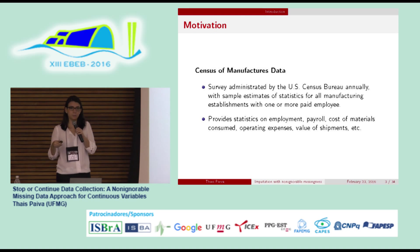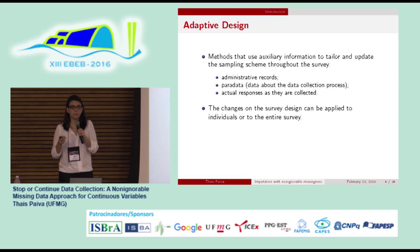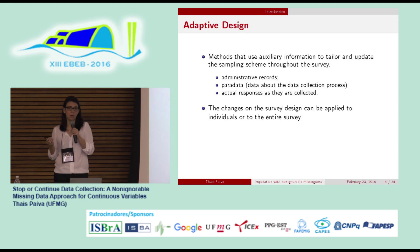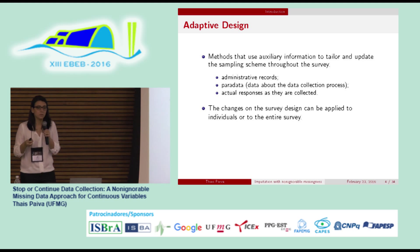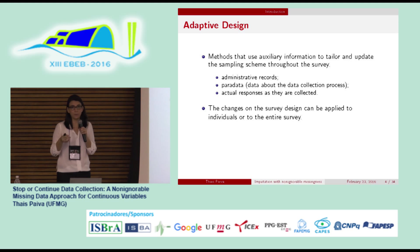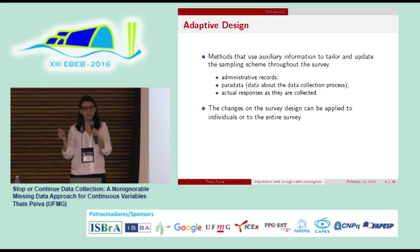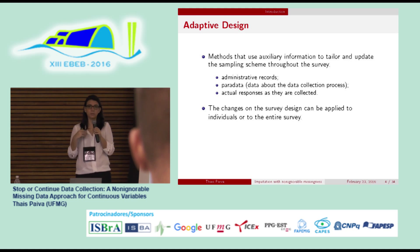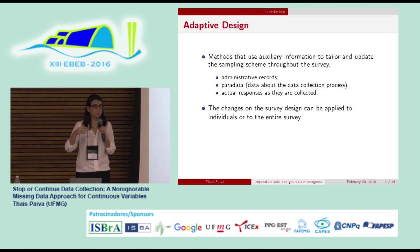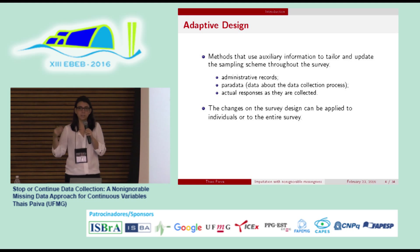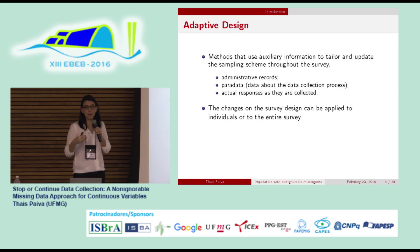We were also thinking about adaptive design, which includes methods that use auxiliary information to tailor and update the sampling scheme while the survey is going on. This auxiliary information can include administrative records, data from other sources, other surveys, and paradata — which is data about the data collection process itself. The actual responses as they are collected can also be used as auxiliary information.